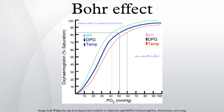The Bohr effect is dependent on allosteric interactions between the hemes of the hemoglobin tetramer. This is evidenced by the fact that neuroglobin, a monomer with no allosteric interactions, does not exhibit the Bohr effect. Hemoglobin mutants with weaker allosteric interactions may exhibit a reduced Bohr effect. In the Hiroshima variant hemoglobinopathy, allosteric interactions in hemoglobin are reduced and the Bohr effect is diminished. During periods of exercise, the mutant hemoglobin has a higher affinity for oxygen and tissue may suffer minor oxygen starvation.